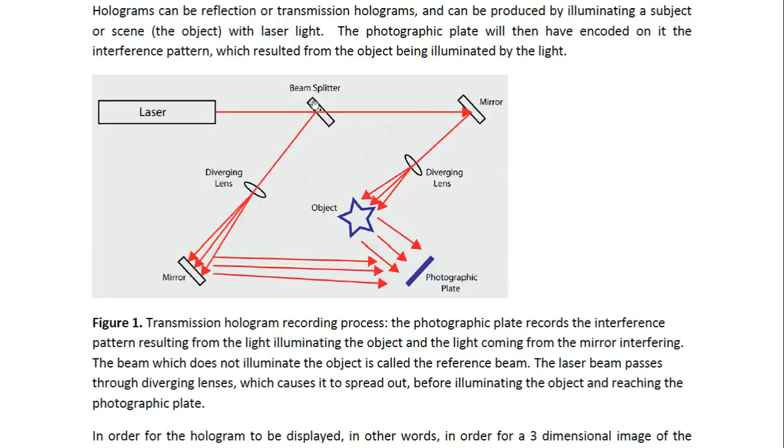One goes in this direction, the other one goes into that direction. There's a mirror so it's reflected there and then it goes through a diverging beam which spreads out the beam.